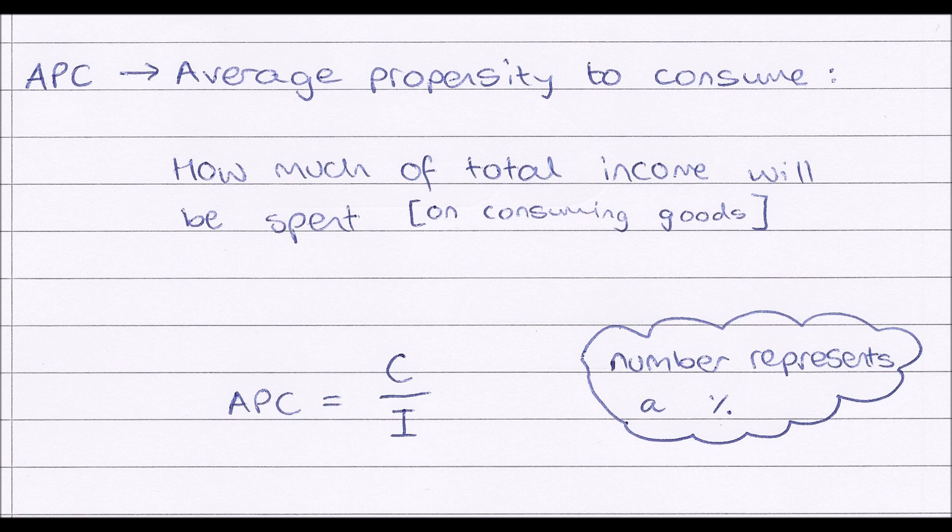Our average propensity to consume measures how much of total income, so how much of all the money individuals and families are getting in, will be spent on consuming goods. Our APC shows how much of total income will be spent on consuming goods. We can work it out mathematically using the formula APC, average propensity to consume, equals C consumption divided by I income.